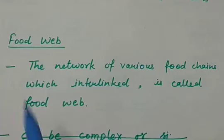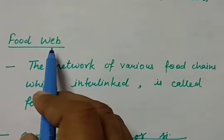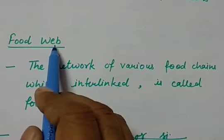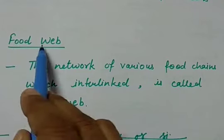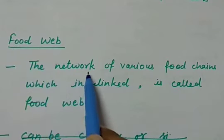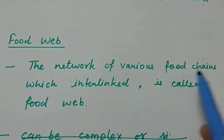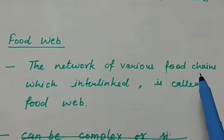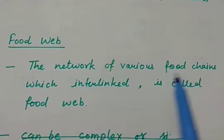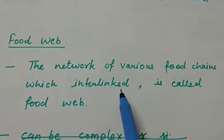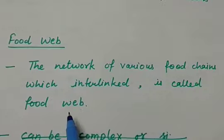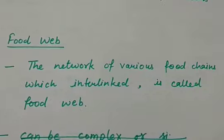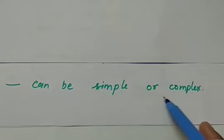The next topic is food web. A food web is the network of various food chains when they are interconnected or interlinked with each other. That network is called a food web. A food web can be simple or complex.